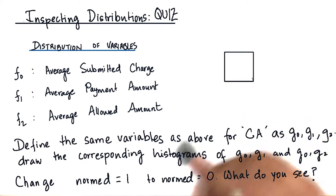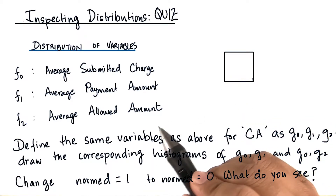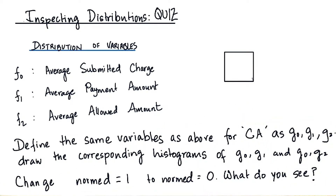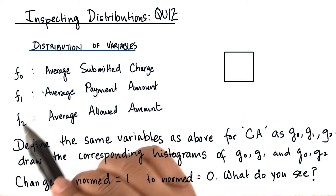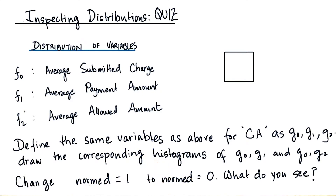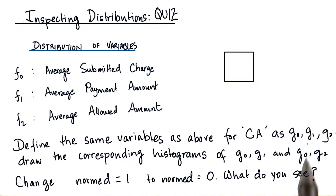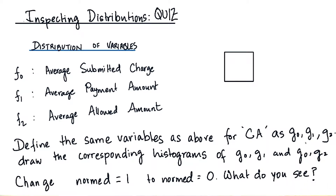In the last video, we plotted distributions of F0, F1, and F2. Define the same variables as above for California as G0, G1, and G2.